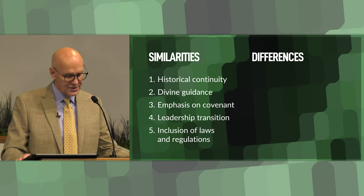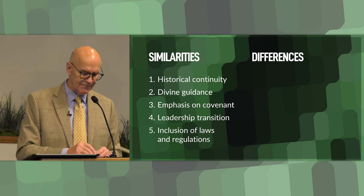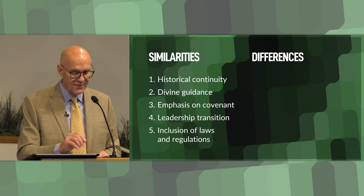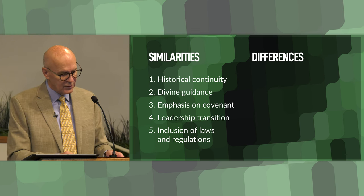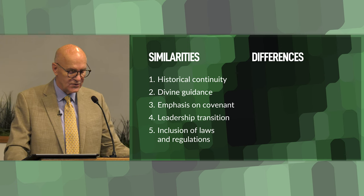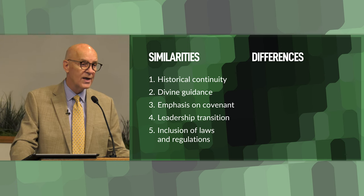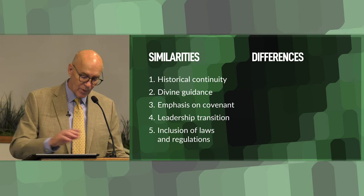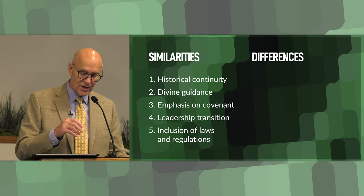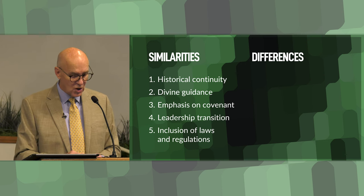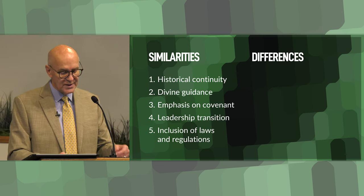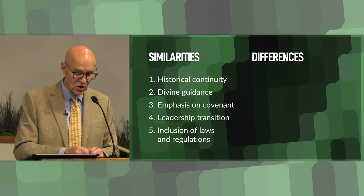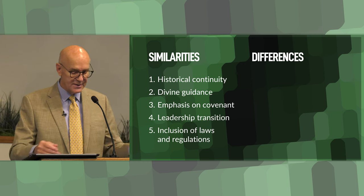Number three, there's an emphasis on the idea of covenant. Both Numbers and Deuteronomy emphasize the covenant between God and the Israelites. The covenant terms, including blessings for obedience and consequences for disobedience, are reiterated in both books. Number four, leadership transition. Both books deal with a transition of leadership from Moses to Joshua. In Numbers, Joshua is appointed as Moses' successor, and in Deuteronomy, Moses commissions Joshua as the new leader to replace himself.